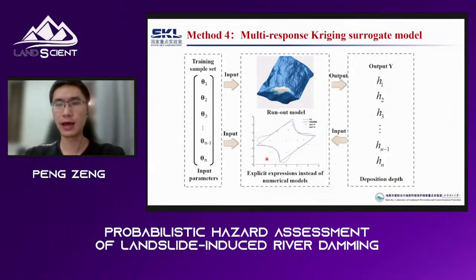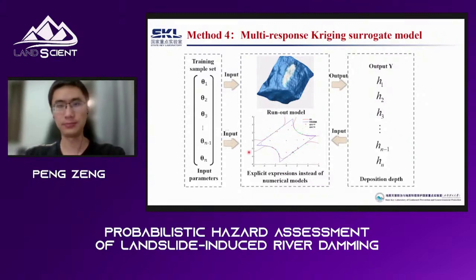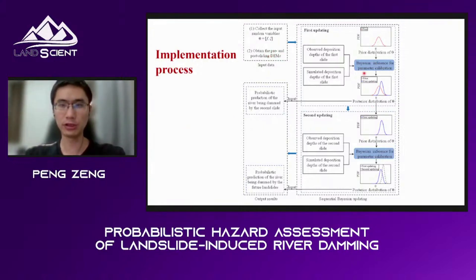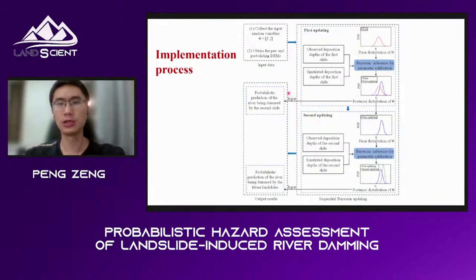To improve computational efficiency, the active learning multi-response kriging surrogate model is used to replace the original performance function. This model provides an explicit approximation to the run-out simulation model and will significantly reduce computational time. In the implementation process, we first collect input random variables and the pre- and post-sliding dimensions of all the landslides considered. Then we update the random variables using information observed in the first landslide, and use the updated variables to compute dam height exceedance probability for the second landslide to validate the proposed method.